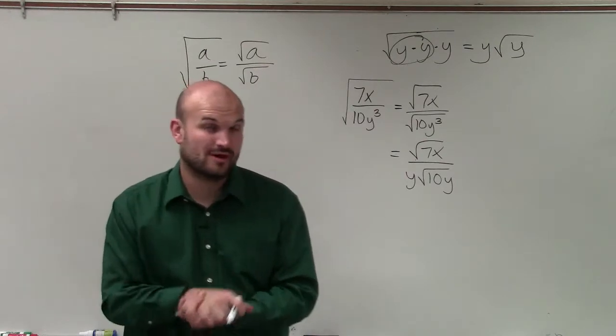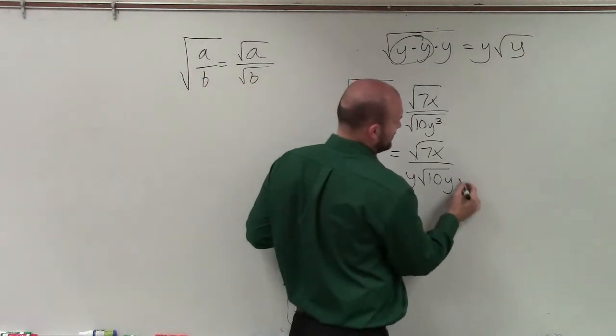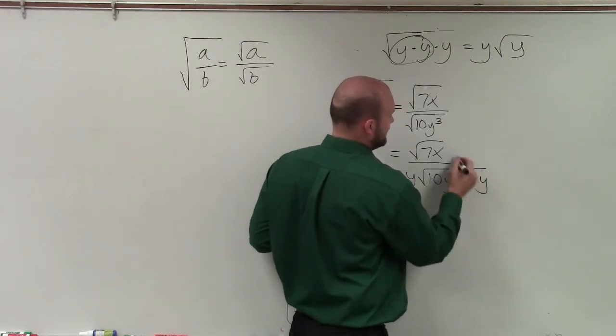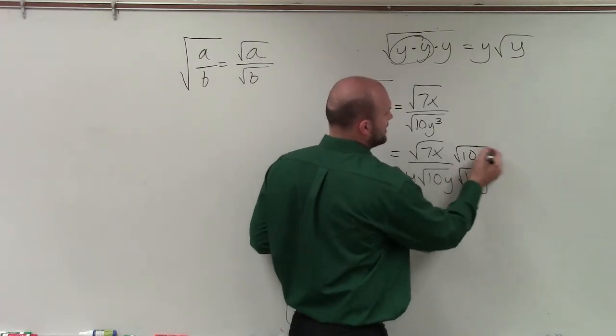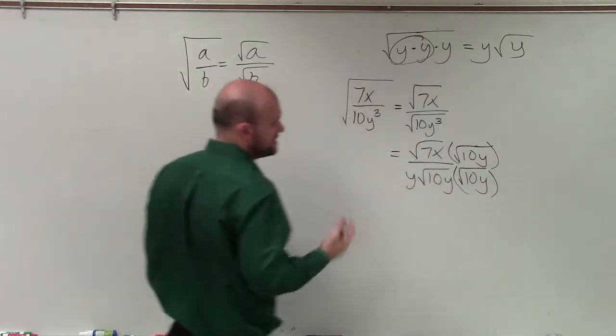So now I simplified the y cubed into y times square root of y, and the 10 had to be down there. Now I need to get rid of the square root of 10y. So to do that, I need to rationalize the denominator by multiplying by the square root of 10y on the top and the bottom. And as long as I multiply on the top and the bottom, I am going to produce an equivalent fraction. So I'm not going to be changing the answer.